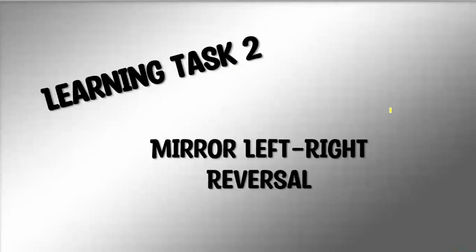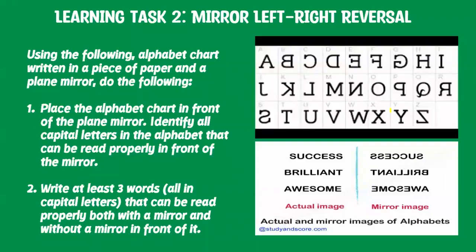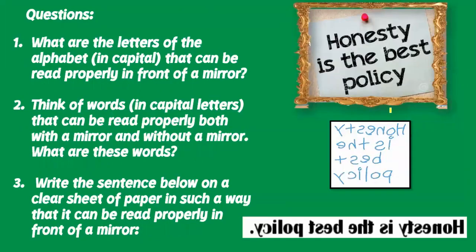For your learning test two — mirror left-right reversal — using an alphabet chart written on a piece of paper and a plane mirror, do the following: Place the alphabet chart in front of the plane mirror. Identify all capital letters that can be read properly in front of the mirror. Write at least three words, all in capital letters, that can be read properly both with and without a mirror. Then answer these questions: What capital letters can be read properly in front of a mirror? What words in capital letters can be read properly both with and without a mirror? Write the sentence 'Honesty is the best policy' on a clear sheet of paper so that it can be read properly in front of a mirror.